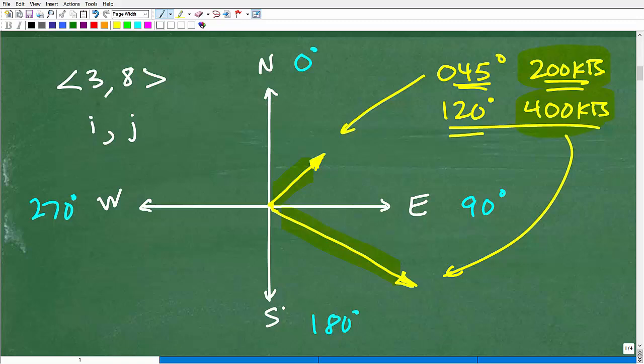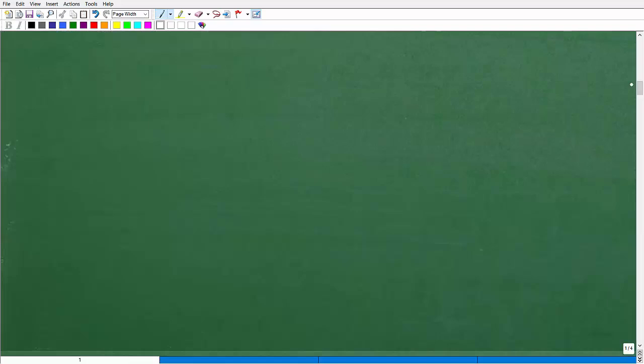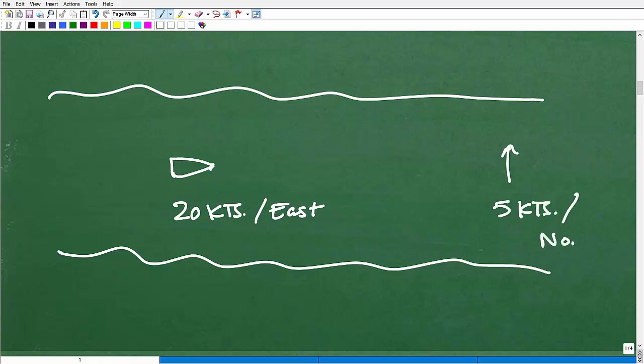Now, what good are vectors? Let's do a quick little problem here. Let's say I have this little boat, and let's say it's not so little, but let's say it's going 20 knots, and it's going due east. And let's say it's right here. And in this river, as this boat's going down this river here, there is a cross current. It's going this way, of 5 knots. And it's due north.